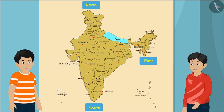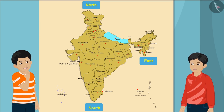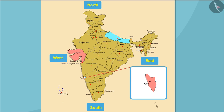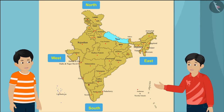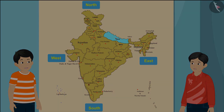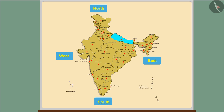Excellent, Raju — now you are reading the map correctly! So does it mean that the states of Gujarat and Goa lie in the west direction? Yes, Raju, you are absolutely right! So children, you just learned which states lie in the four directions of India.